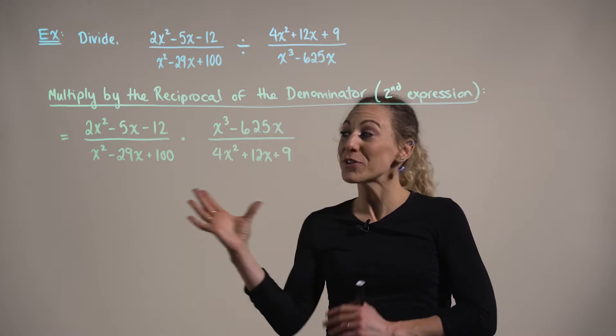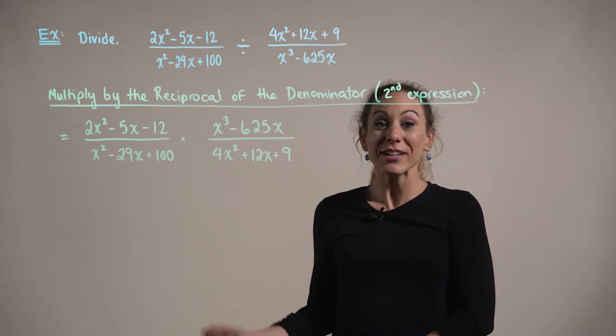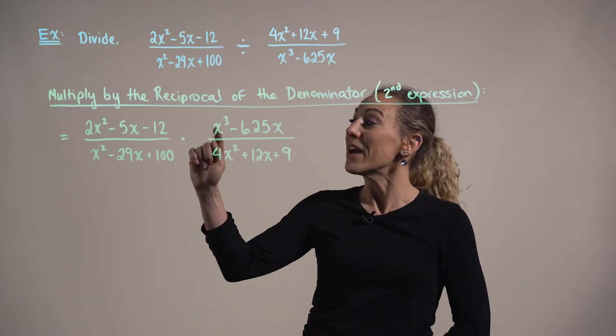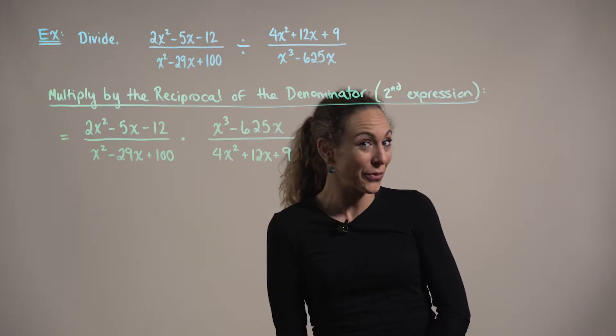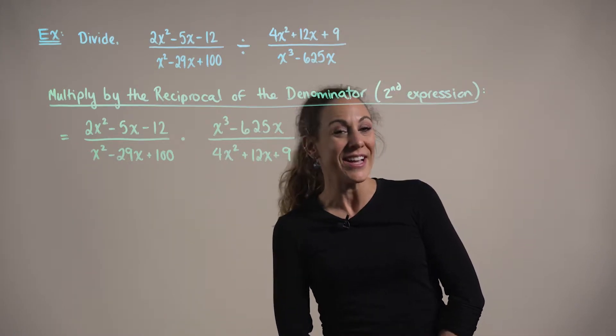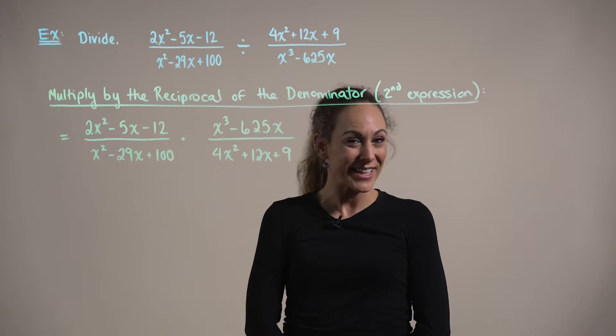So we know that to multiply two rational expressions, we're going to need to factor the numerator and denominator of both of the rational expressions completely. And then we can simplify by canceling like terms.